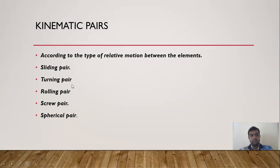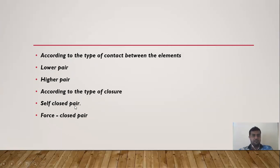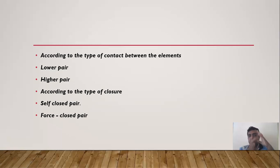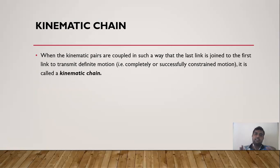According to the types of contact between elements, there is a lower pair — when two links of the pair have surface contact during relative motion — and a higher pair — when the two links have point or line contact. According to types of closure, there is a closed pair and a forced closed pair.